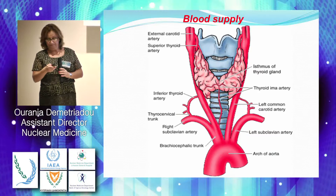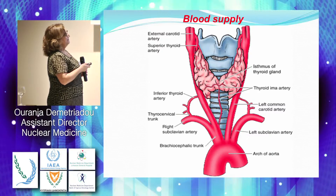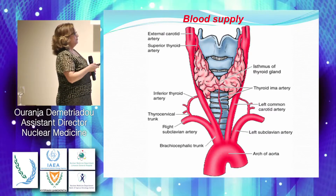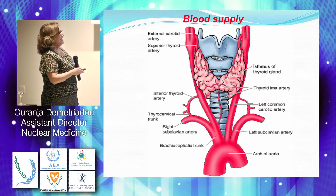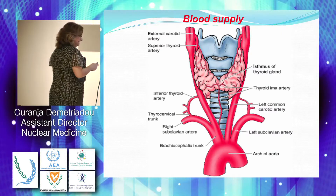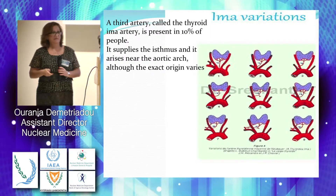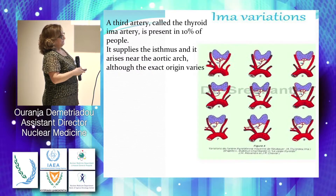Blood supply: we have the superior thyroid artery and the inferior thyroid artery. The superior arises from the external carotid and the inferior from the subclavian artery. Sometimes we have a third artery that gives blood supply to the isthmus — the thyroid ima artery — whose origin may vary, and the surgeon should be aware of that because it can be coming out from the aortic arch, the carotid artery, or even higher.